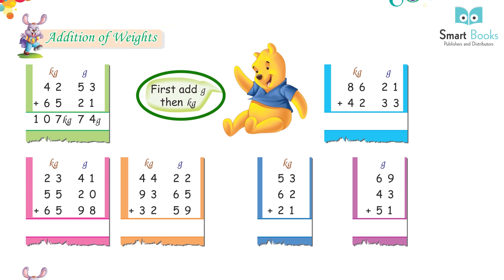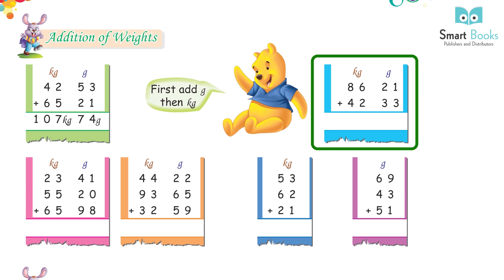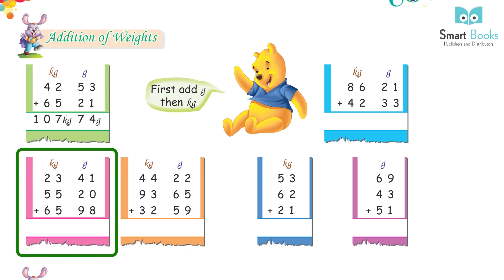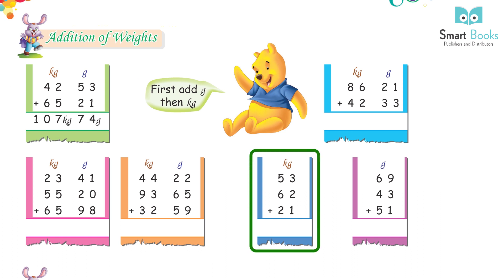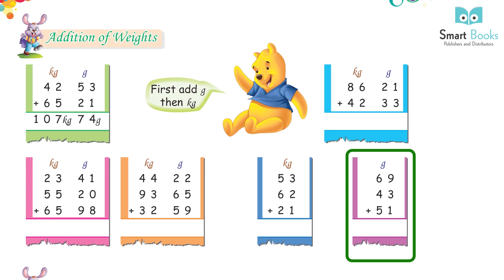First add grams, then kilograms. 86 kg 21 g + 42 kg 33 g = 128 kg 52 g. 23 kg 41 g + 55 kg 20 g + 65 kg 98 g = 144 kg 59 g. 44 kg 22 g + 93 kg 65 g + 32 kg 59 g = 170 kg 46 g. 53 kg + 62 kg + 21 kg = 136 kg. 69 g + 43 g + 51 g = 163 g.